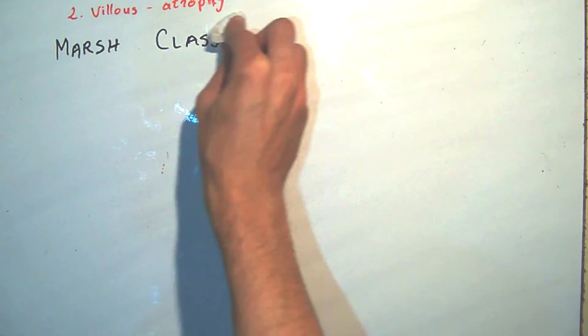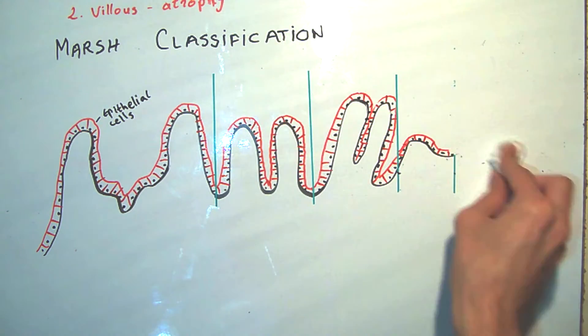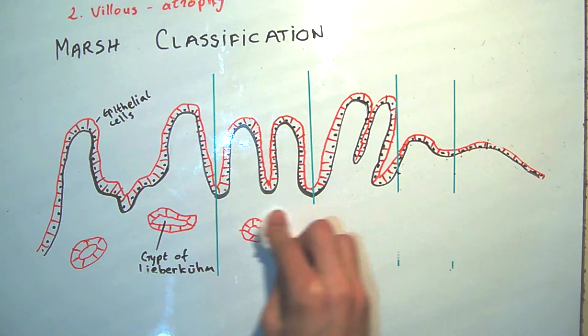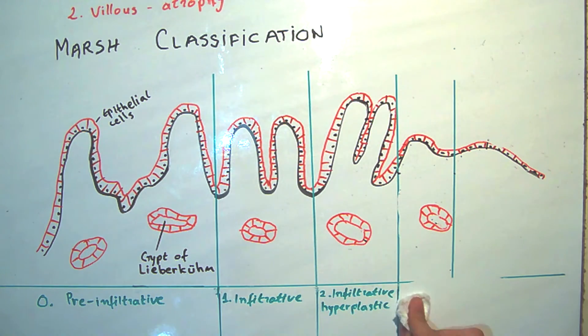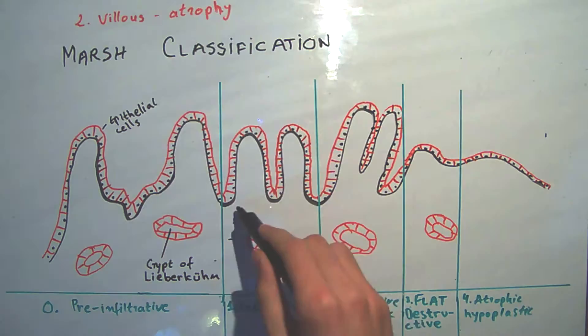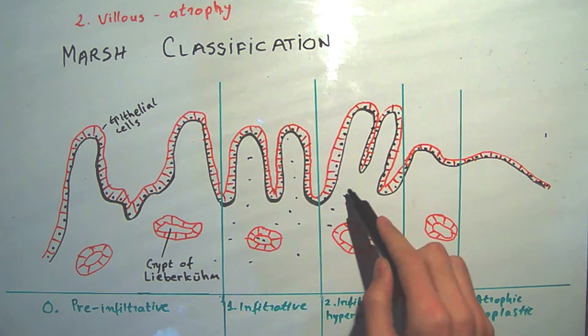There exists a classification by Marsh, which divides the pathology in five stages, which are pre-infiltrative, infiltrative, infiltrative-hyperplastic, flat-destructive, and hypoplastic atrophy.